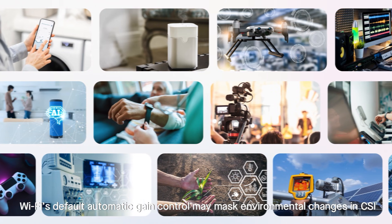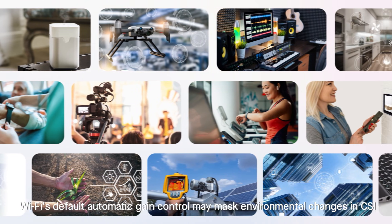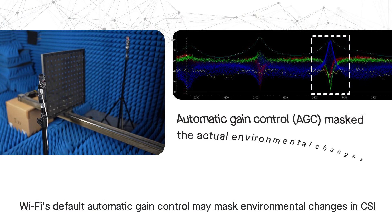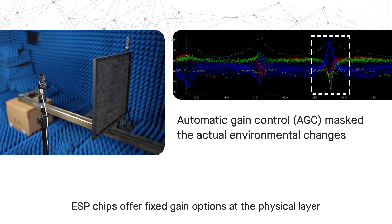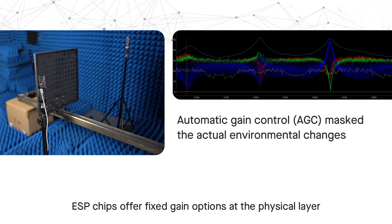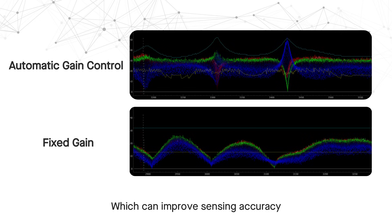To accelerate the deployment of wireless sensing capabilities, Espressif provides a complete solution. Wi-Fi's default automatic gain control may mask environmental changes in CSI. ESP chips offer fixed gain options at the physical layer, which can improve sensing accuracy. In multi-antenna solutions, we use a multi-chip co-crystal oscillator design.